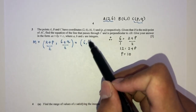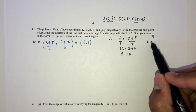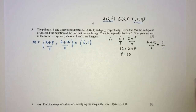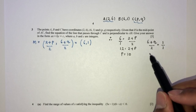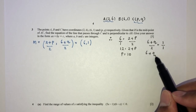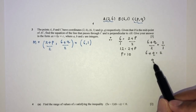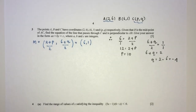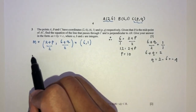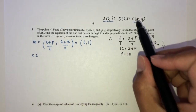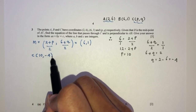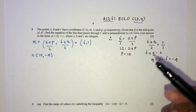Same way, (6 plus q) over 2 equals 1. Cross multiplying gives 6 plus q equals 2, so q equals 2 minus 6, which is minus 4. So once we have this, the point C is (10, minus 4).